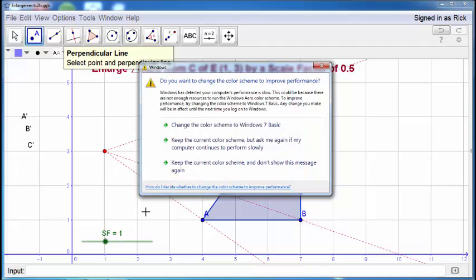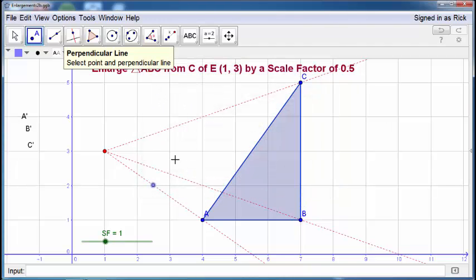Now what about point B? From point B it's two down and six across. So half of two is one, and half of six is three. So that's one, two, three, which is there.